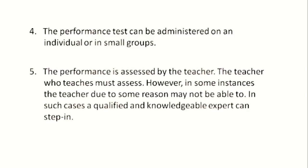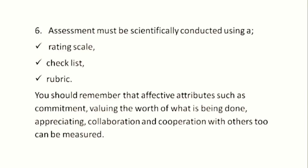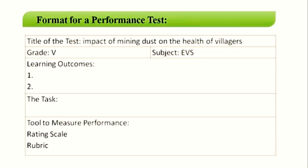A performance task can be administered to groups or done individually, and must always be assessed by the teacher — or in their absence, by a knowledgeable expert who understands the concept and the rubric. Assessment is done using rating scales, checklists, or a rubric. A performance test should always have a format comprising: the title of the task, the grade, the subject (EVS), the learning outcomes, a clear description of the task, and the tool used to measure performance — whether a rating scale or rubric — clearly defined.